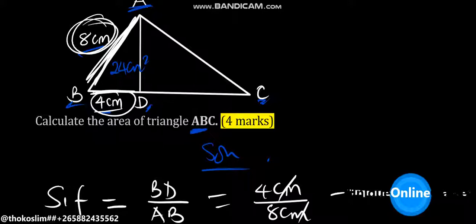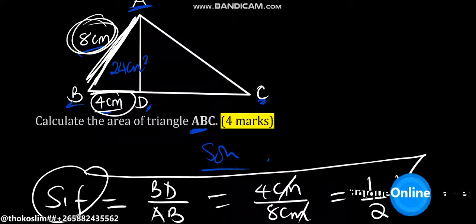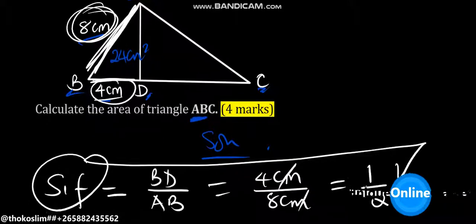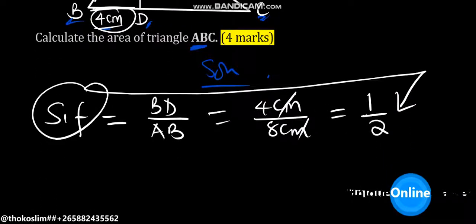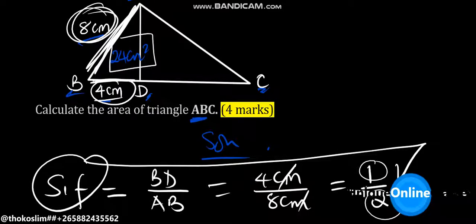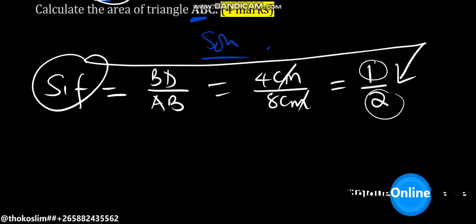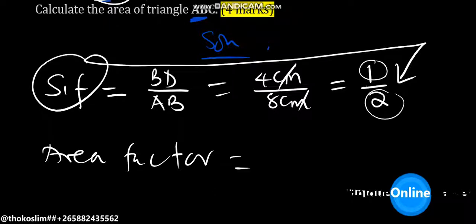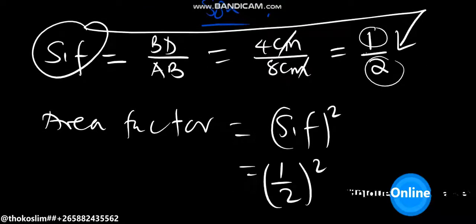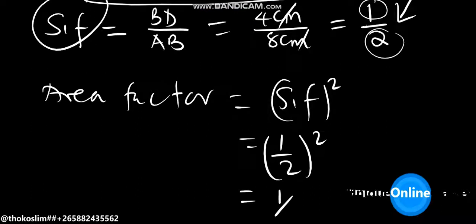If we cancel, 4 into 4 is 1 and 4 into 8 is 2, so our scale factor here is 1 over 2, which is one half. Now using this scale factor, we calculate the area factor. The area factor is equal to the scale factor squared, which is one half squared — 1 squared is 1 and 2 squared is 4 — so our area factor is 1 over 4.